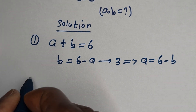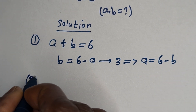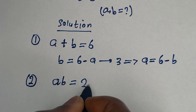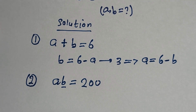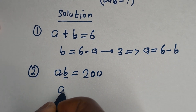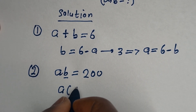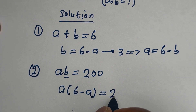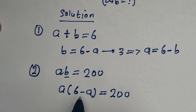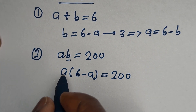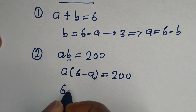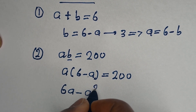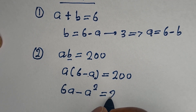Now from equation 2, AB is equal to 200. Let us substitute for B: A multiplied by (6 minus A) is equal to 200. Let us open the bracket: A multiplied by 6 gives 6A, and A multiplied by minus A gives minus A squared, so 6A minus A squared is equal to 200.